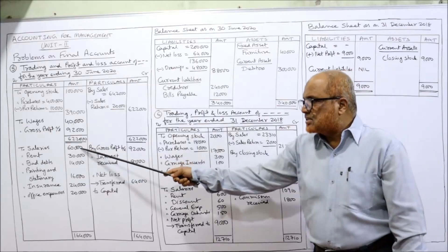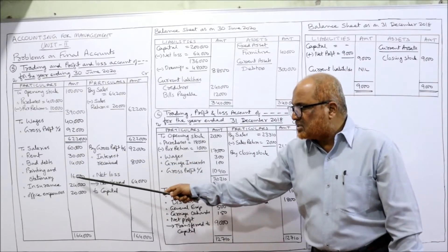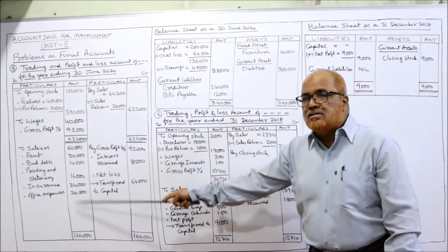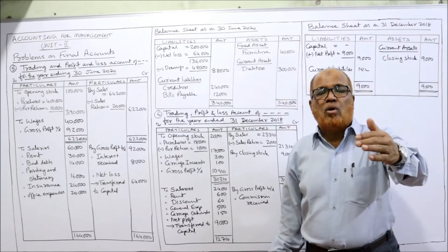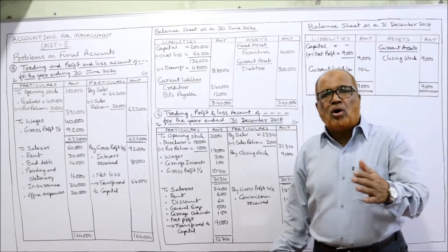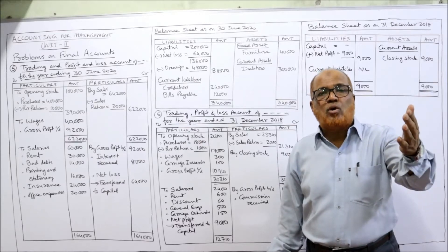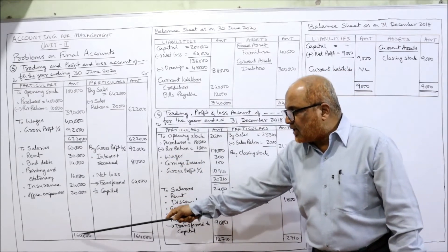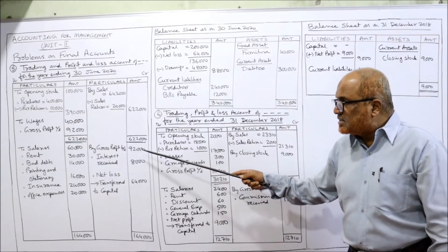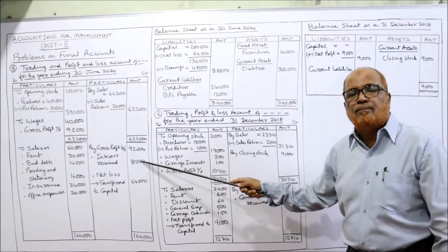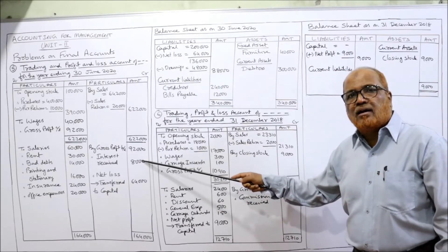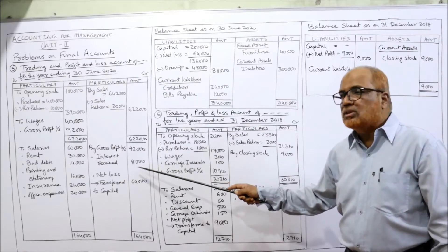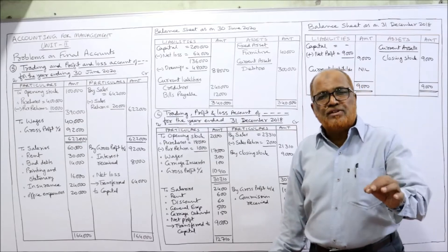The indirect expenses are: salaries sixty thousand, rent thirty thousand, bad debts fourteen thousand, printing and stationery sixteen thousand, insurance twenty-four thousand, office expense twenty thousand. In this problem, the debit side is more — expenses exceed income. In all previous problems income was more, so there was a profit. Here there is a loss. Debit side total is one lakh sixty-four thousand; credit side is ninety-two thousand plus eight thousand equals one lakh. So the net loss is sixty-four thousand.